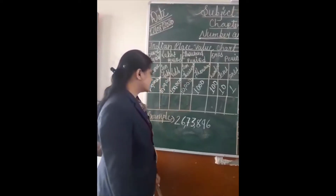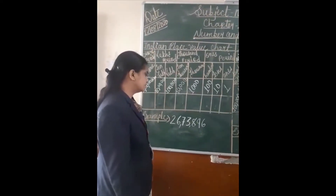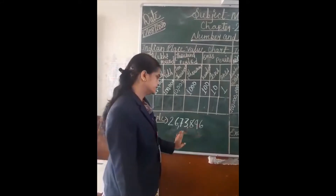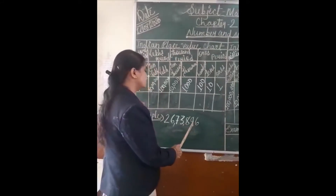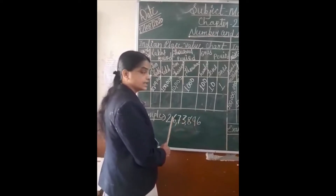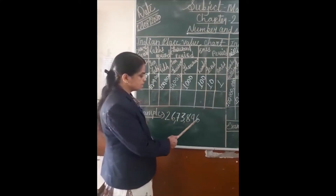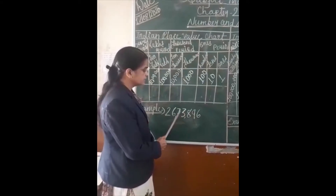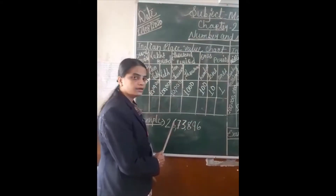Now we will take one example of the Indian system. First we will count how many digits are there: 1, 2, 3, 4, 5, 6, 7. The places are ones, tens, hundreds, thousands, ten thousands, lakhs, ten lakhs.